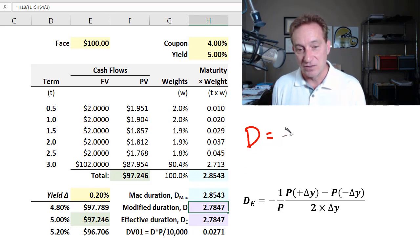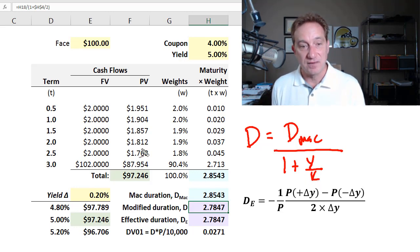So to get the modified duration, we take the Macaulay duration and we divide by one plus the yield divided by K, the number of periods per year that we are compounding. The modified duration is concerned with an impact on the current value, which is a present value. So it's incorporating the effect of compounding. And so in this case, K equals two.